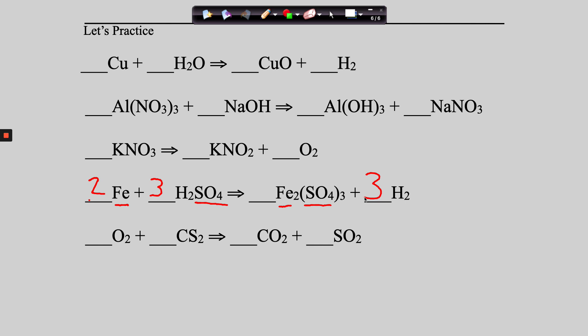Hint three — balance oxygens last. Here's CS2 + O2 → CO2 + SO2. Go over here first: one carbon on each side, balanced. Two sulfurs on the left, one on the right — put a 2 in front of SO2. Now balance the oxygens: two plus four is six on the right, so we need a 3 in front of O2. Done.